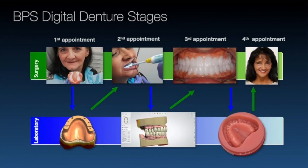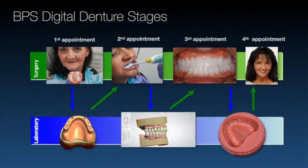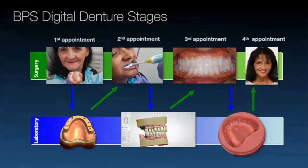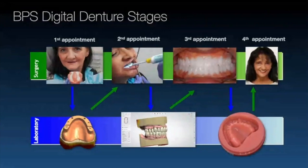These are the stages of the digital denture. If you're familiar with BPS, this will look familiar. The first appointment covers impressions and centric tray recording. That then goes to the lab to be scanned, custom trays with the anathometer gothic arch tracer are designed, and they go back for functional impressions and jaw relationship recording with the tracer.